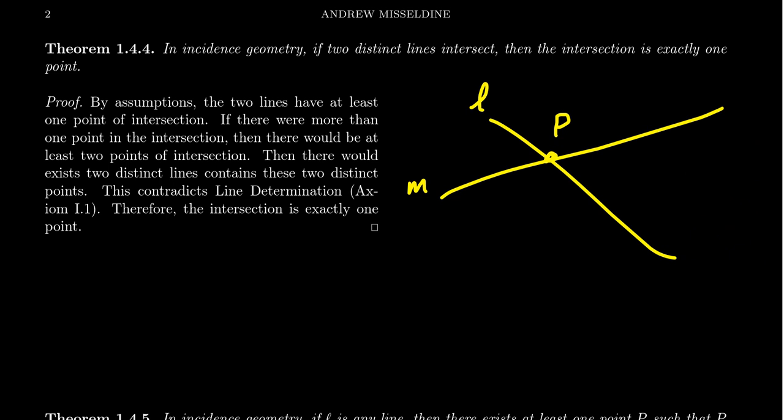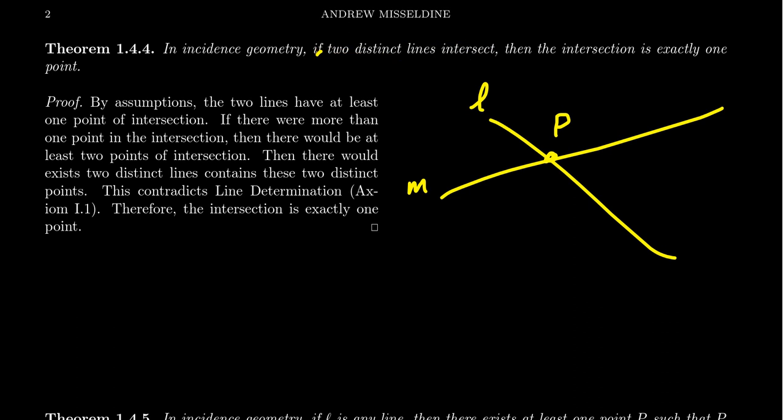This proof only used line determination — no other axioms were necessary. So this first theorem of incidence geometry is really just a theorem of line determination: if a geometry has line determination, then intersections are unique when they happen. In Fano geometry, we could strengthen that theorem because all lines intersect, but in general this is the result. The axiom of line determination gives us uniqueness of intersection — lines should only intersect at one point, if they intersect.